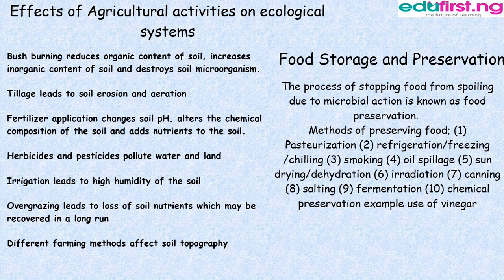Food storage and preservation. The process of stopping food from spoiling due to microbial action is known as food preservation. Methods of preserving food: 1. Pasteurization. 2. Refrigeration, freezing, or chilling. 3. Smoking. 4. Pickling. 5. Sun drying or dehydration. 6. Irradiation. 7. Canning. 8. Salting. 9. Fermentation. 10. Chemical preservation — for example, use of vinegar.